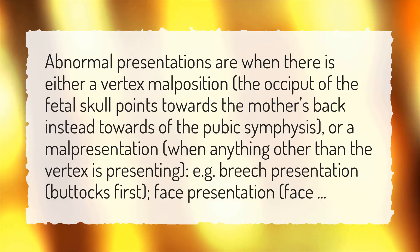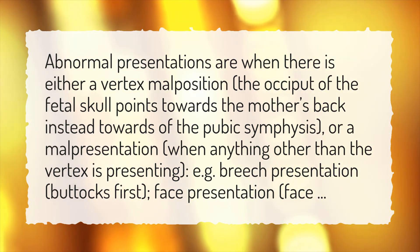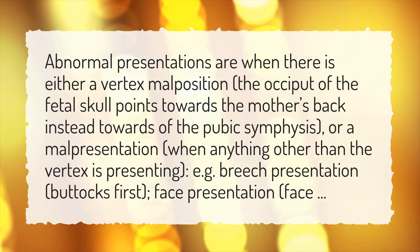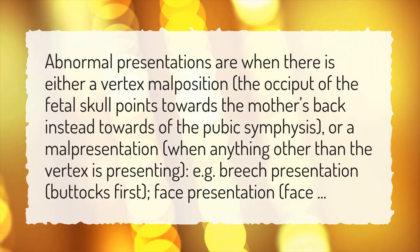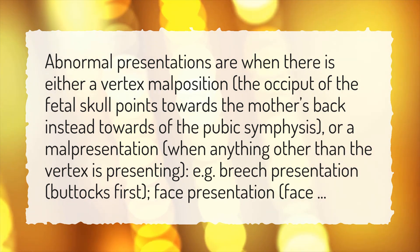Abnormal presentations are when there is either a vertex malposition — where the occiput of the fetal skull points towards the mother's back instead of towards the pubic symphysis — or a malpresentation, when anything other than the vertex is presenting, e.g. breech presentation (buttocks first) or face presentation.